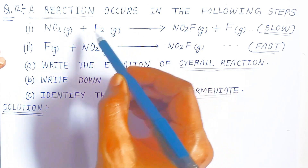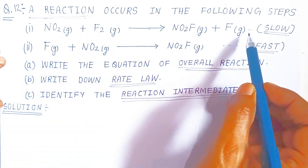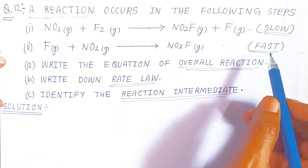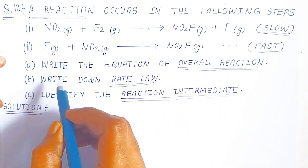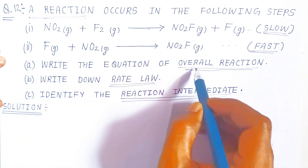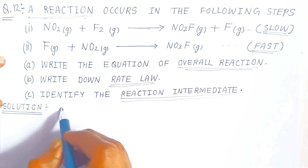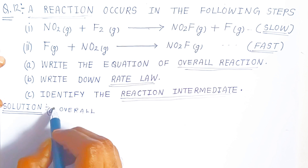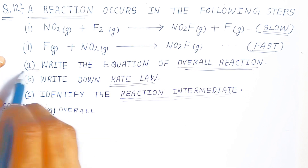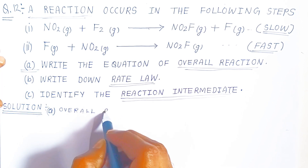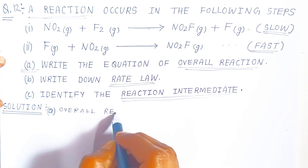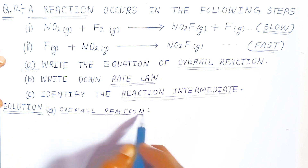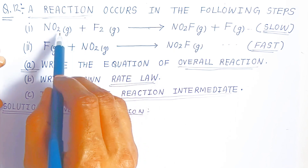The steps are given but the whole reaction is not. Step one is very slow and step two is fast. To write the overall reaction in an examination, you first write 'overall reaction' and then combine the two steps.